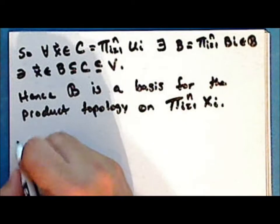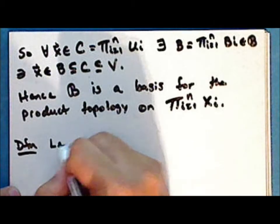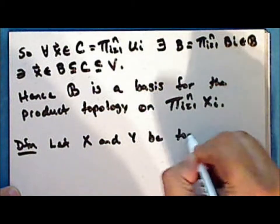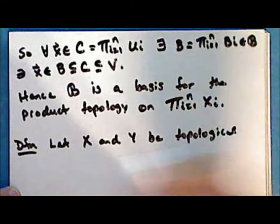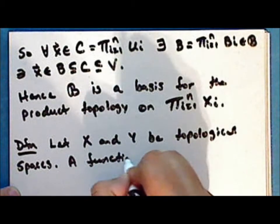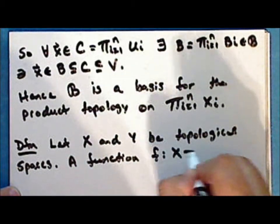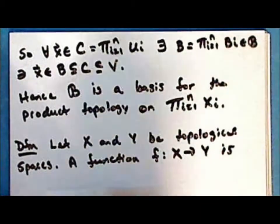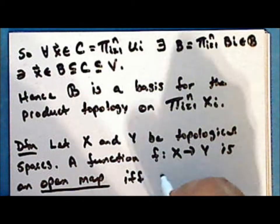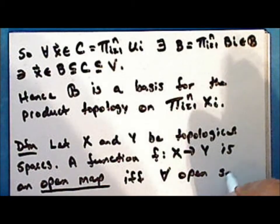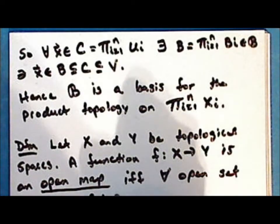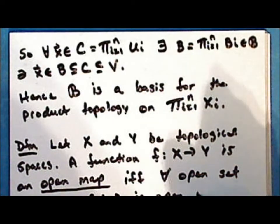New definition: Let X and Y be topological spaces. A function f mapping X into Y is an open map if and only if for every open set U in the space X, the direct image of that set U is open in the space Y.